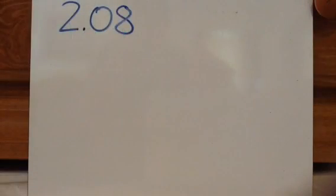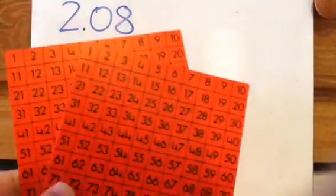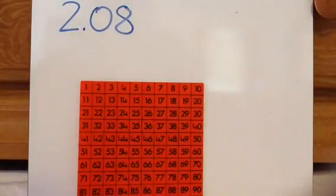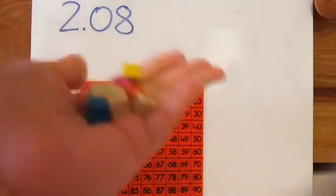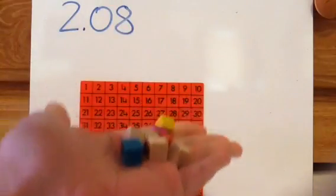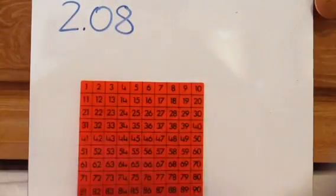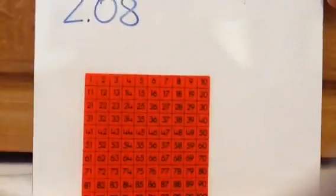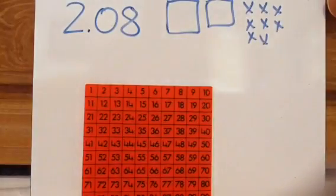So 2 and 8 hundredths — notice I have no tenths in this one, so here's my 2 ones, like $2, and then 8 hundredths blocks. This is what 2 and 8 hundredths looks like, and coloring it in: 2 wholes and then 8 of these hundredths squares.